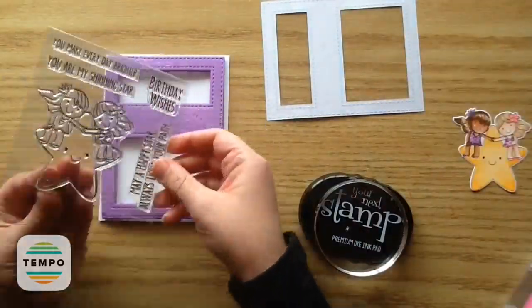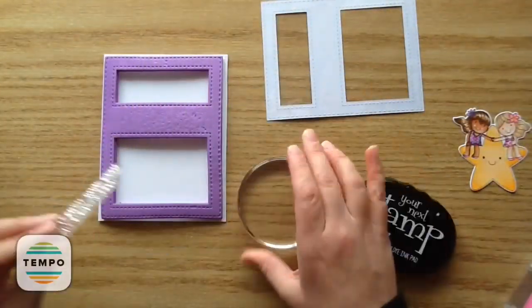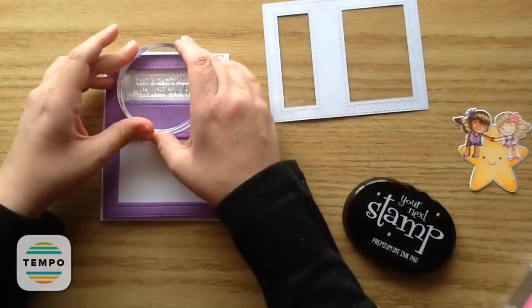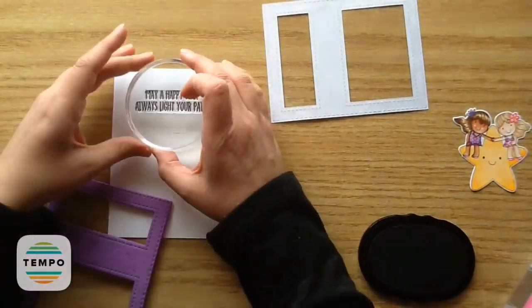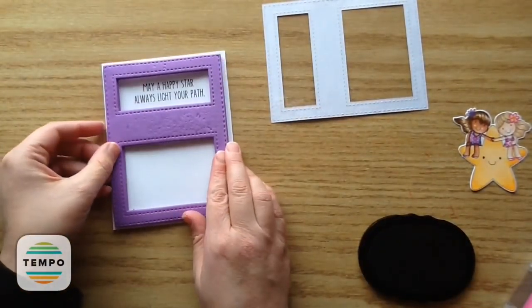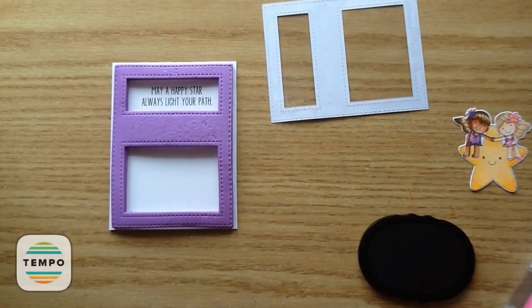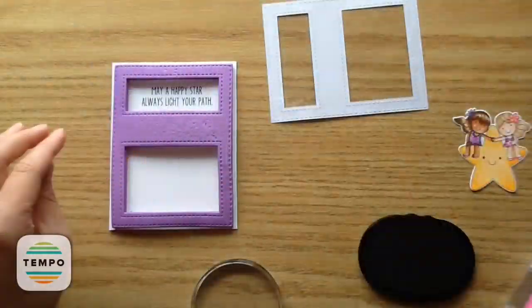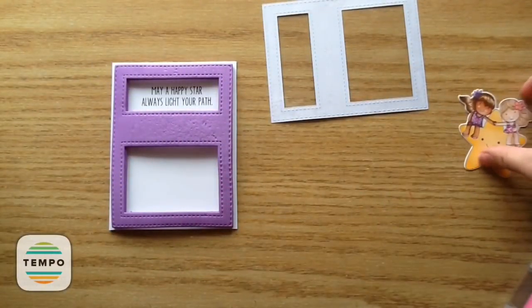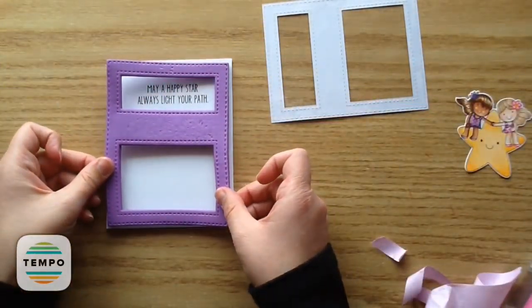So for my sentiment, I'm going to use this one that says, May a happy star always light your path. And then I just put that back so I knew where it was going to go. And I'm just putting it back into the packaging there. And then I'm just going to remove the backing of that foam piece. And I can layer it up there.